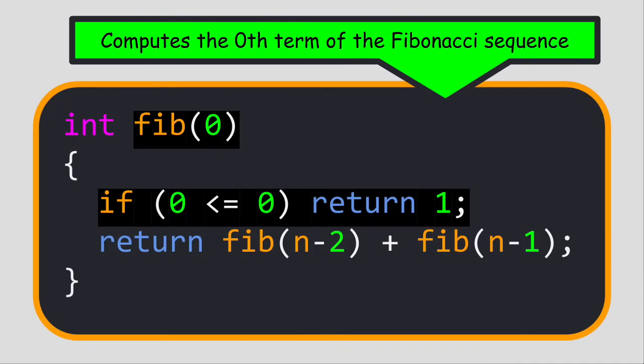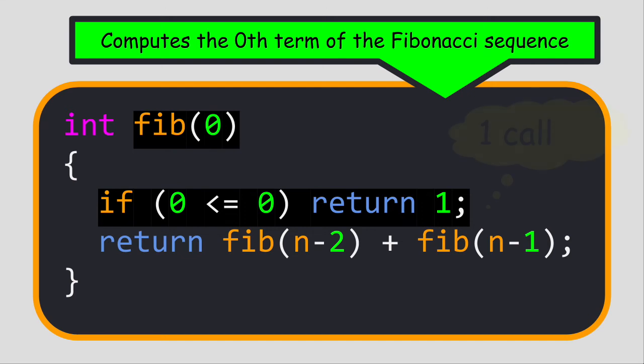If you want to compute the zeroeth term of the Fibonacci sequence, only one function call will be made since you are immediately exiting the function through the base case.